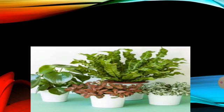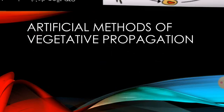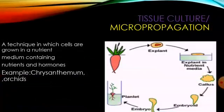I will start with the artificial method of vegetative propagation. As it includes various processes, let's learn about them in brief. The first method is tissue culture, or micropropagation.